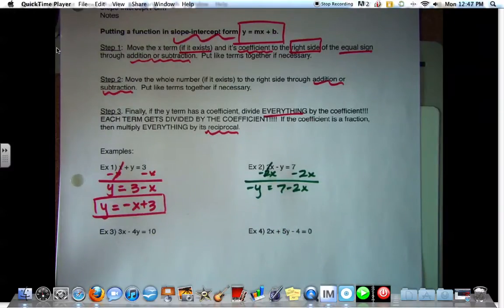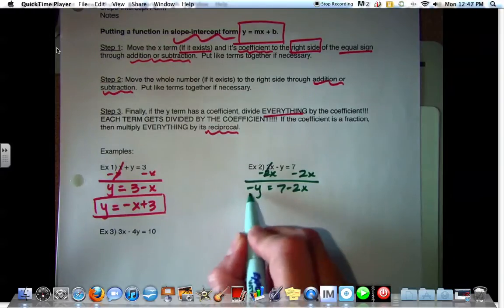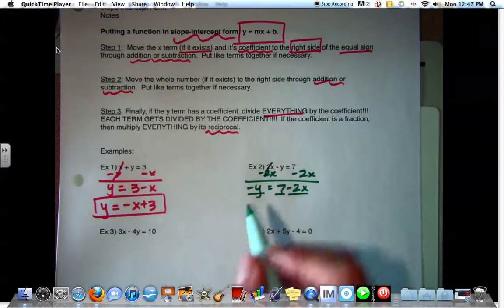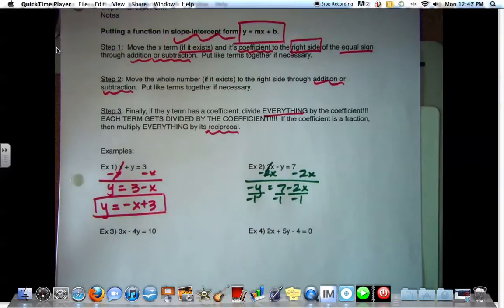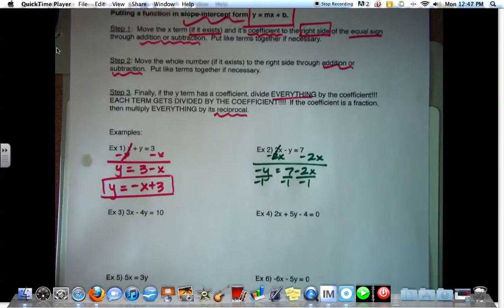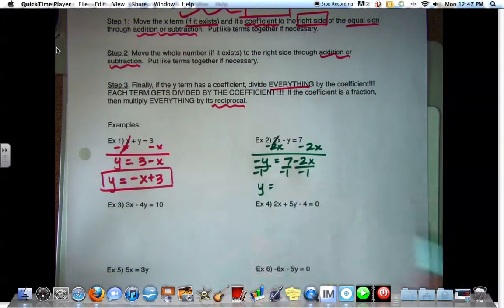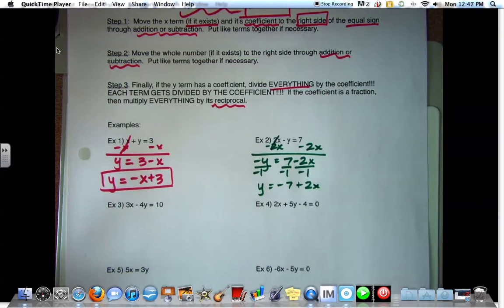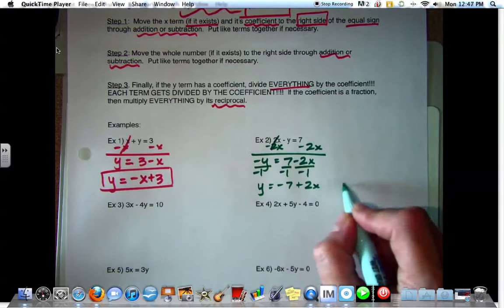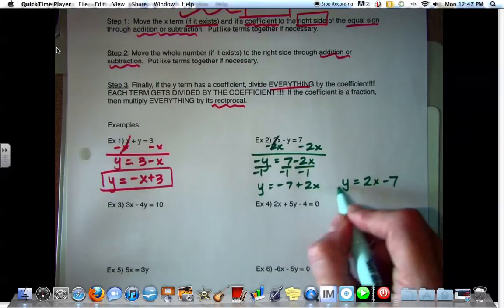Is the Y all by itself? No. What's attached to it? Negative. What do we do to get rid of the negative? Divide by negative one. So we have to divide everything, the negative Y, the seven, and the negative two X. We have to divide them all by negative one. Negative divided by a negative gives us positive. So now, Y equals negative seven plus two X. So if I want to rearrange the terms so that it reads easier, Y equals two X minus seven.